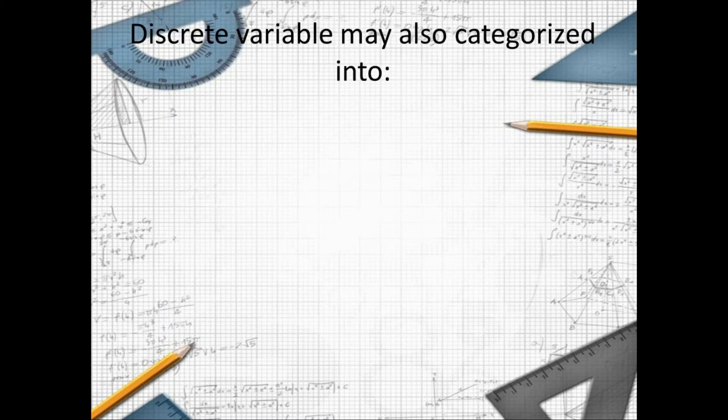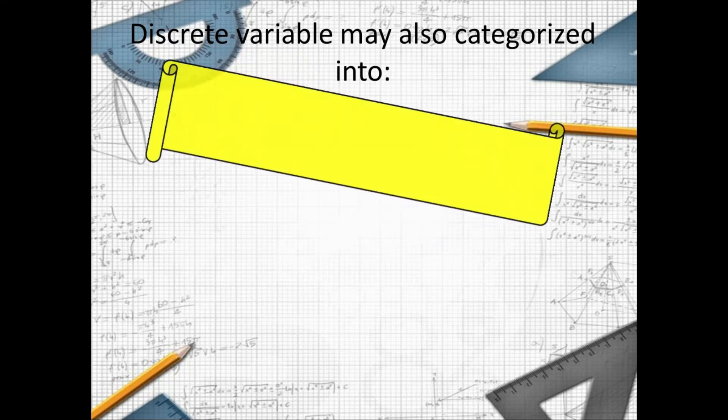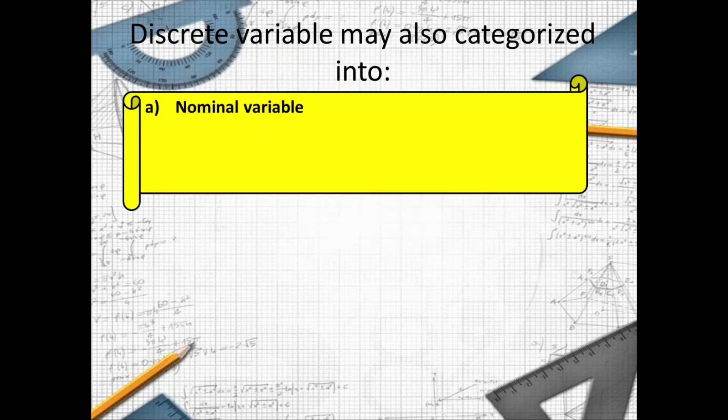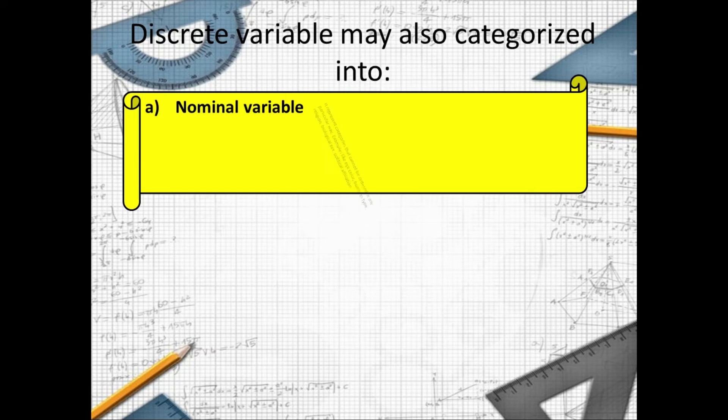Discrete variable may also categorize into letter A: nominal variable. It represents categories that cannot be ordered in any particular way.